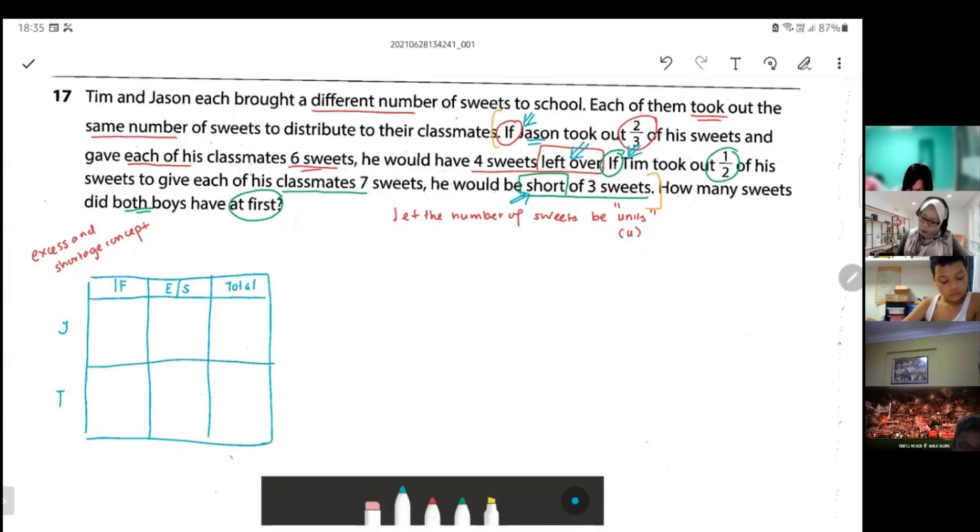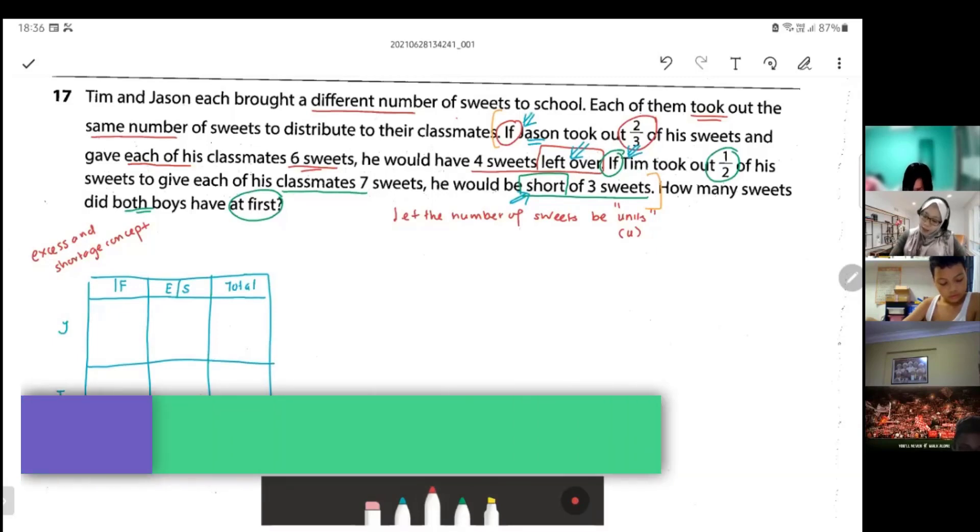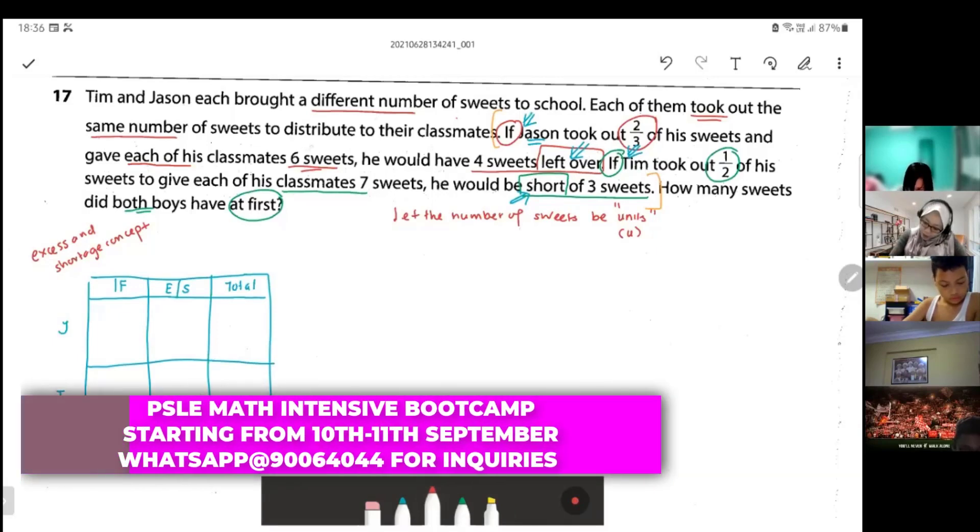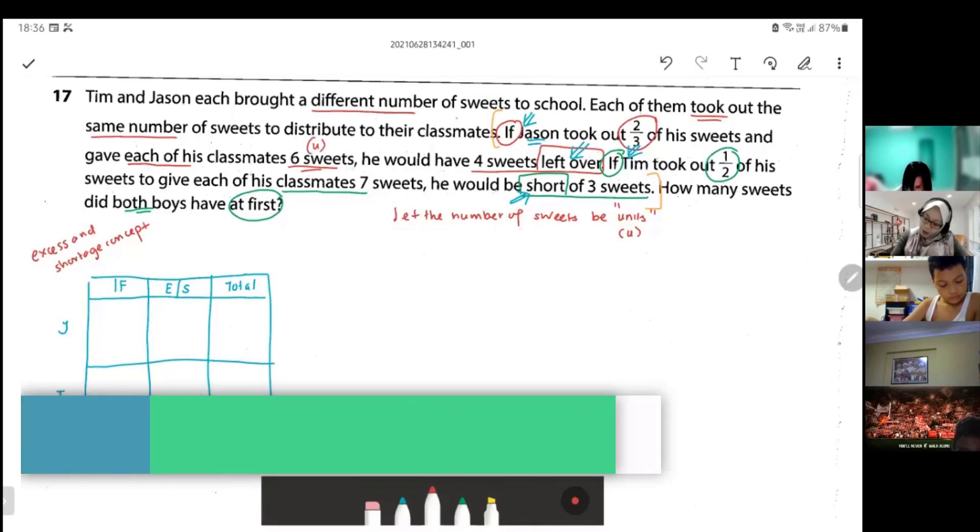Now we're going to fill up the information. Jason gave six sweets, sweets is already U, six units. And then Tim gave seven sweets, means seven units like that.